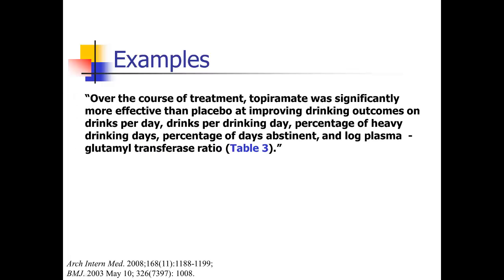Here's an example. One study reads: over the course of treatment, topiramate was significantly more effective than placebo at improving drinking outcomes on drinks per day, drinks per drinking day, percentage of heavy drinking days, percentage of days abstinent, and log plasma glutamyl transferase ratio. There's a whole table with lots of numbers, but the text gives a high-level summary: on all these outcomes, the treatment beat the placebo. If you want more details, go to the table — that's a good job summarizing.